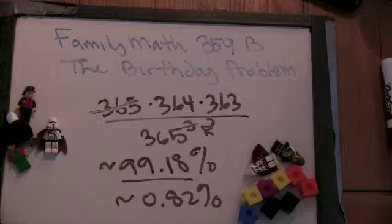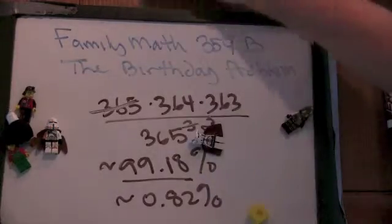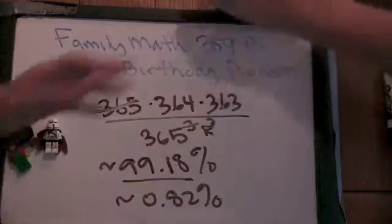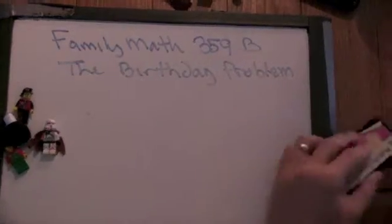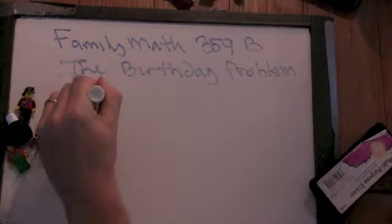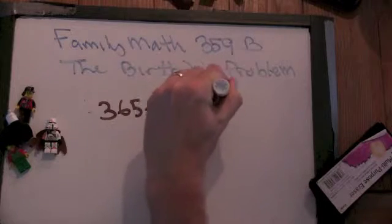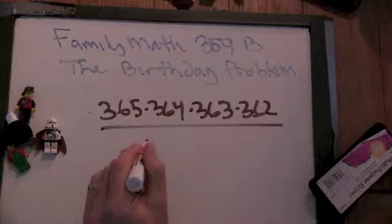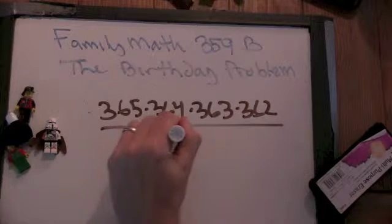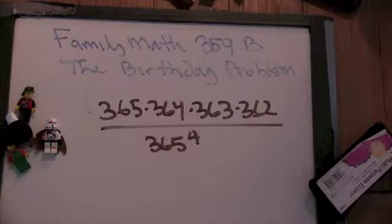Well, 365 times 364 times 363 times 362, because this is 1 over 365 to the fourth. And this is our complementary category. So what is this probability going to tell us? 365 times 364 times 363 times 362, all over 365 to the fourth. So this is going to tell us the probability that four people, at random, will not have the same birthday.